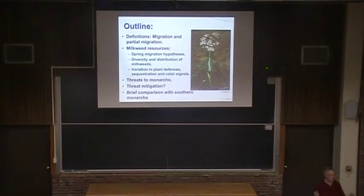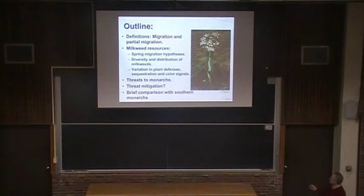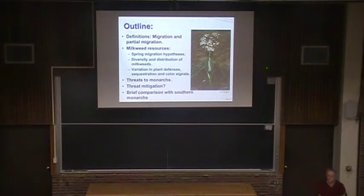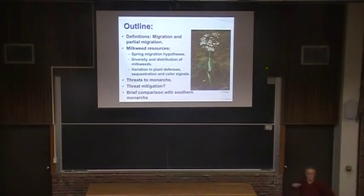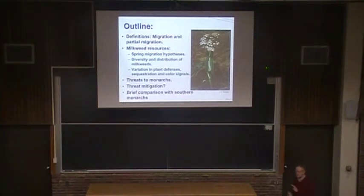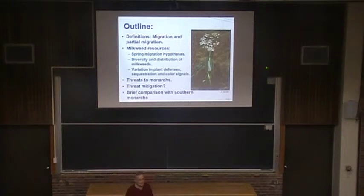I'm going to define what migration is — it sounds like a strange thing to do, that we should all know what migration is, but unfortunately we don't. Then I'm going to talk about milkweeds and the resources that monarch butterflies are exploiting. Basically, what the butterflies are trying to do is put their offspring onto milkweeds so that their offspring have something to feed on. We're all looking for resources — we make decisions about how we move, like walking to the store or driving. Monarch butterflies are doing exactly the same things, making choices in time and space on a continental scale.